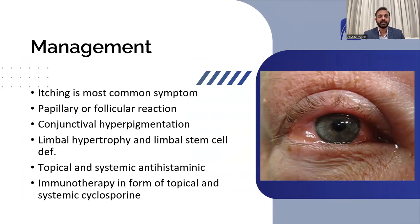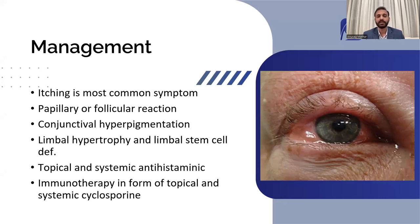Itching is the most common symptom of any allergy, whether in the eye, nose, or skin — whenever you have itching, that suggests some sort of allergy. Allergic conjunctivitis can show both papillary and follicular reaction, but papillary reaction is very common. Papillae can be small, cobblestone, or giant papillae, particularly on the upper tarsal conjunctiva. Follicular reaction is most commonly seen in atopic keratoconjunctivitis. Patients with chronic allergic conjunctivitis have muddy-coloured conjunctiva due to proliferation of pigment cells.